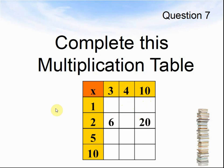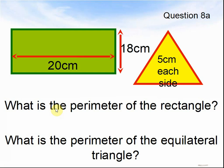Here comes question 8. Question 8a. What is the perimeter of the rectangle if the long sides are 20cm and the short sides are 18cm each? What is the perimeter of the equilateral triangle if every side is 5cm long? Pause the video until you are ready for 8b.